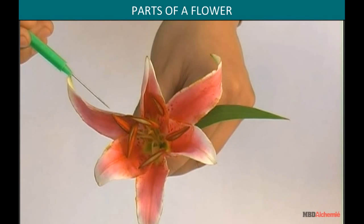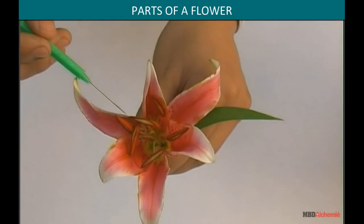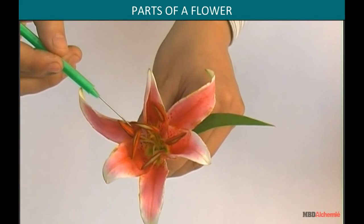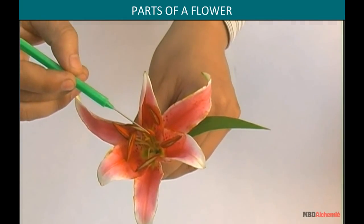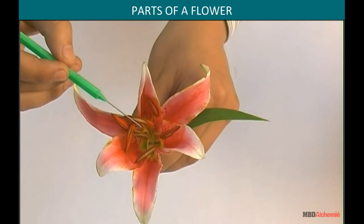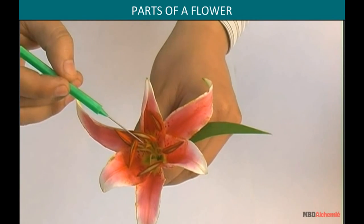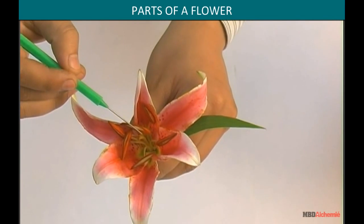The most important part of the flower is the sex organs. These are the male sex organs, that is the anthers, which bear the pollen grains. This is the stigma, style, and the gynoecium, which forms the female sex organs.